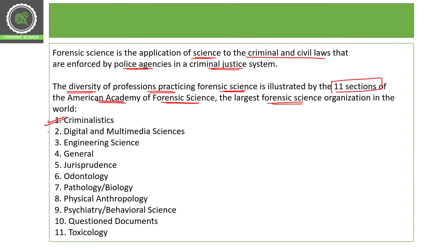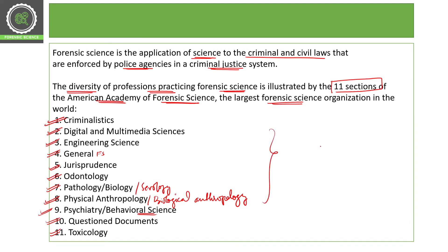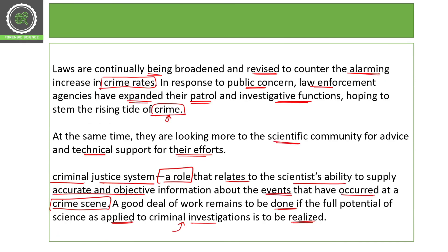The 11 sections of forensic science identified by the American Academy of Forensic Science are: criminalistics, digital and multimedia science, engineering science, general forensic science, jurisprudence, odontology, pathology/biology/serology, physical anthropology and biological anthropology, psychiatry and behavioral science, questioned documents, and toxicology. These sections cover the scope of forensic science and the many areas in which it can be applied to administer law.